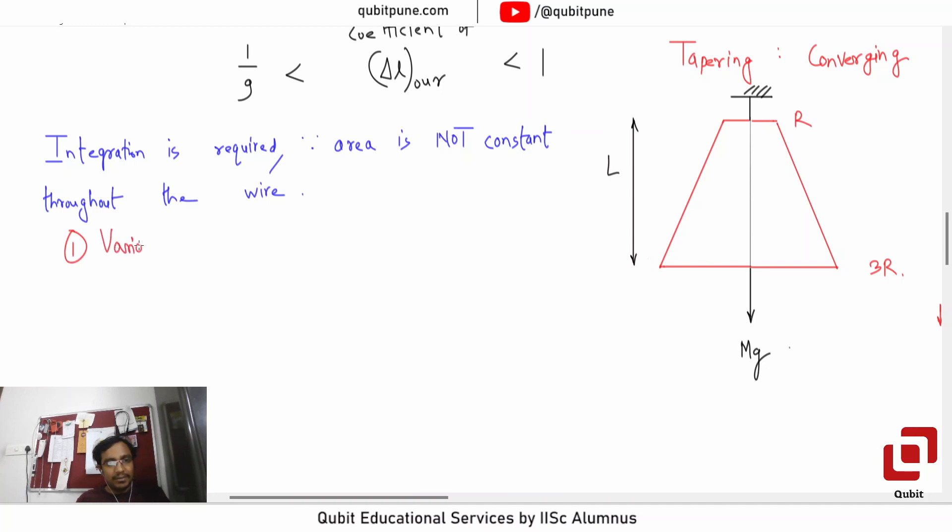First, the variable of integration will be there. Then its limits will be there, and thirdly the integrand will be there. Now, what I am going to assume as my variable of integration is the distance of that particular elemental area from our top. So let the variable of integration be x and let it vary from 0 to L.